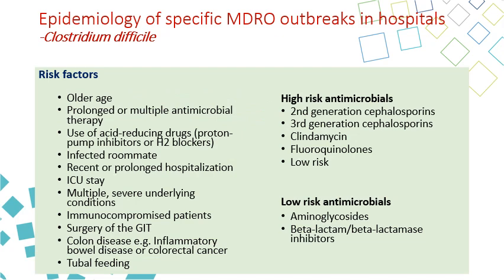Risk factors include advanced age, prolonged or multiple antimicrobial therapy, use of acid-reducing drugs such as proton pump inhibitors and H2 blockers, exposure to an infected roommate, recent or prolonged hospitalization, ICU stay, multiple comorbidities, immunocompromised status, surgery, colon disease especially inflammatory bowel disease, and tube feeding. High-risk antimicrobials for triggering C. difficile include second and third generation cephalosporins, clindamycin, and fluoroquinolones. Low-risk antimicrobials include aminoglycosides and beta-lactamase inhibitors.